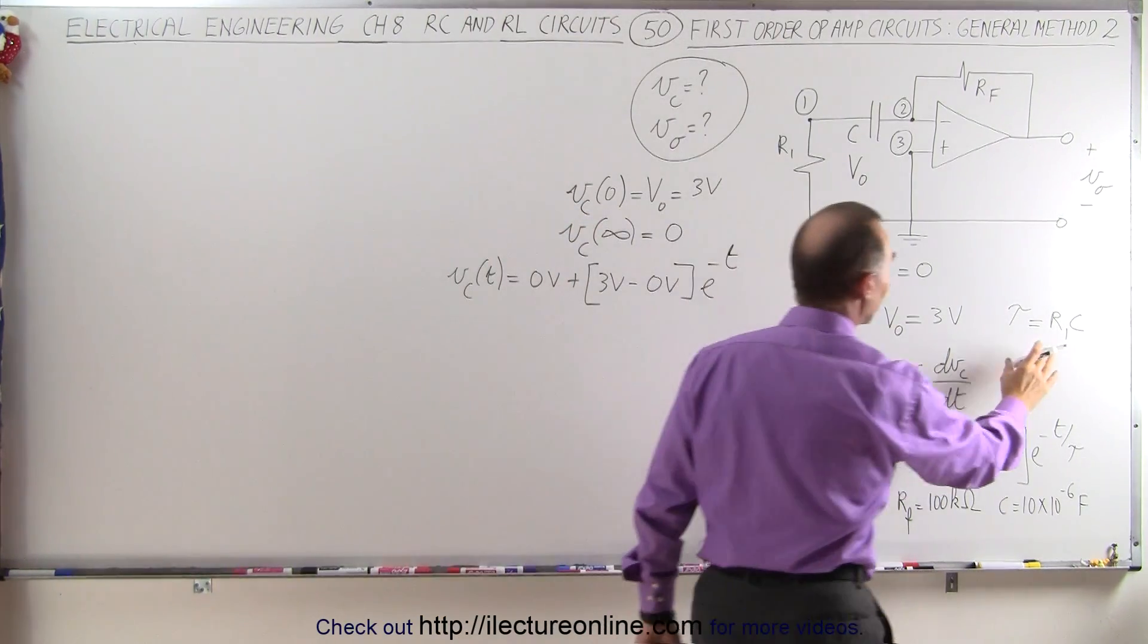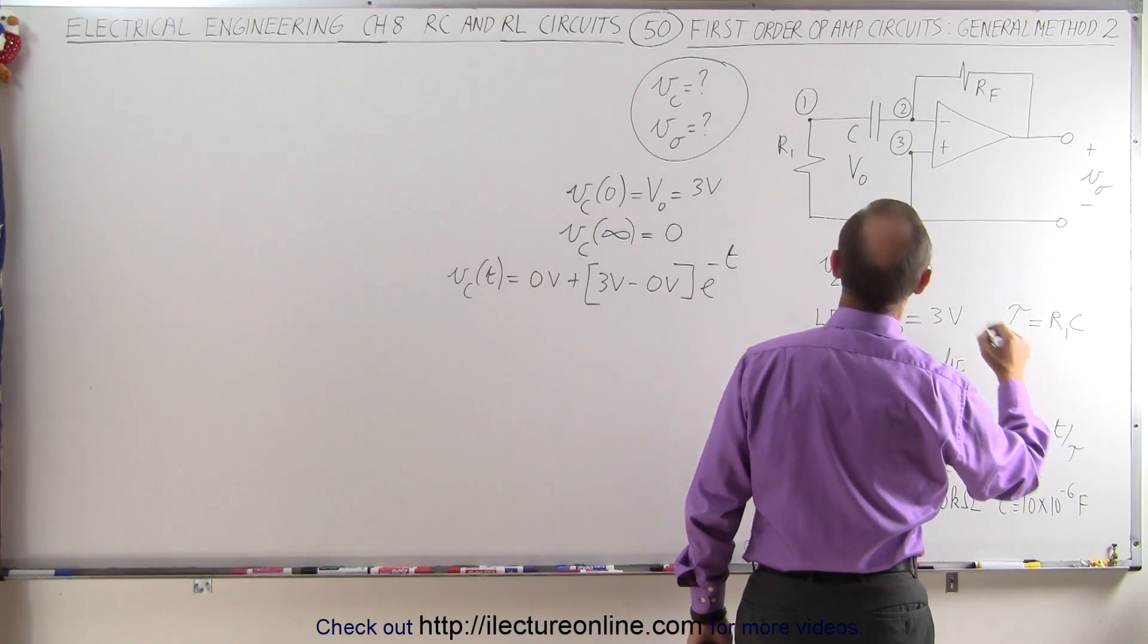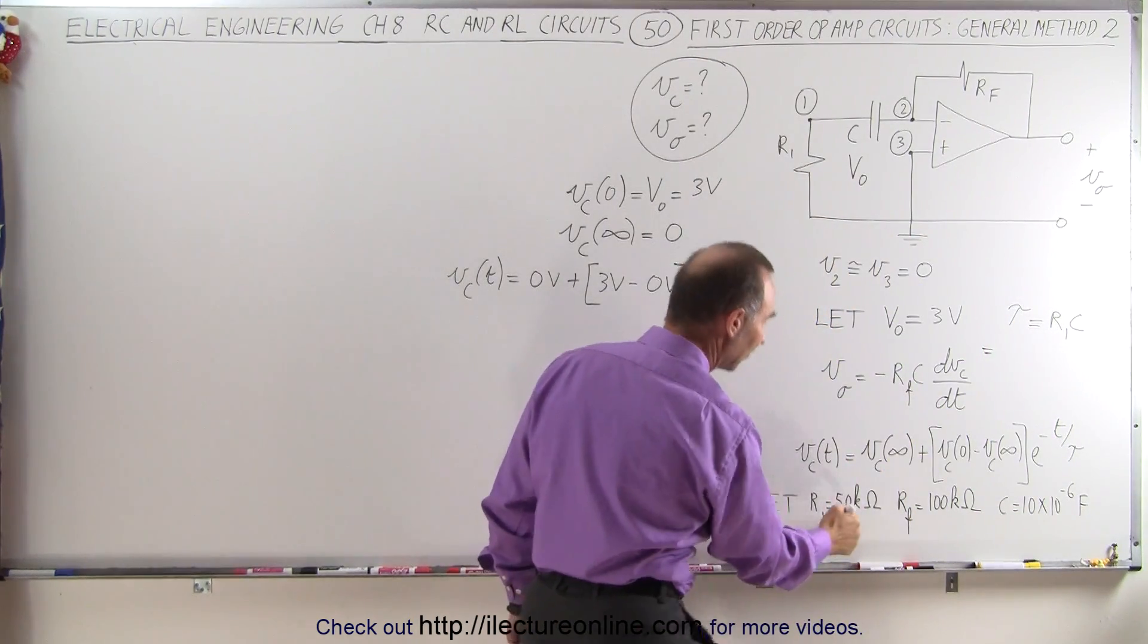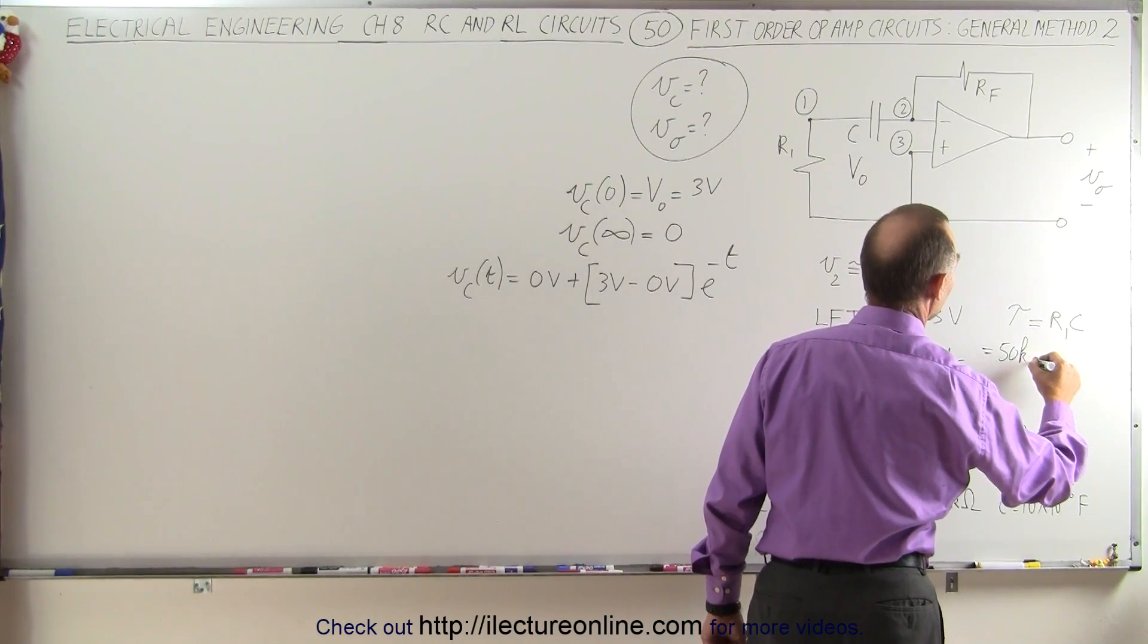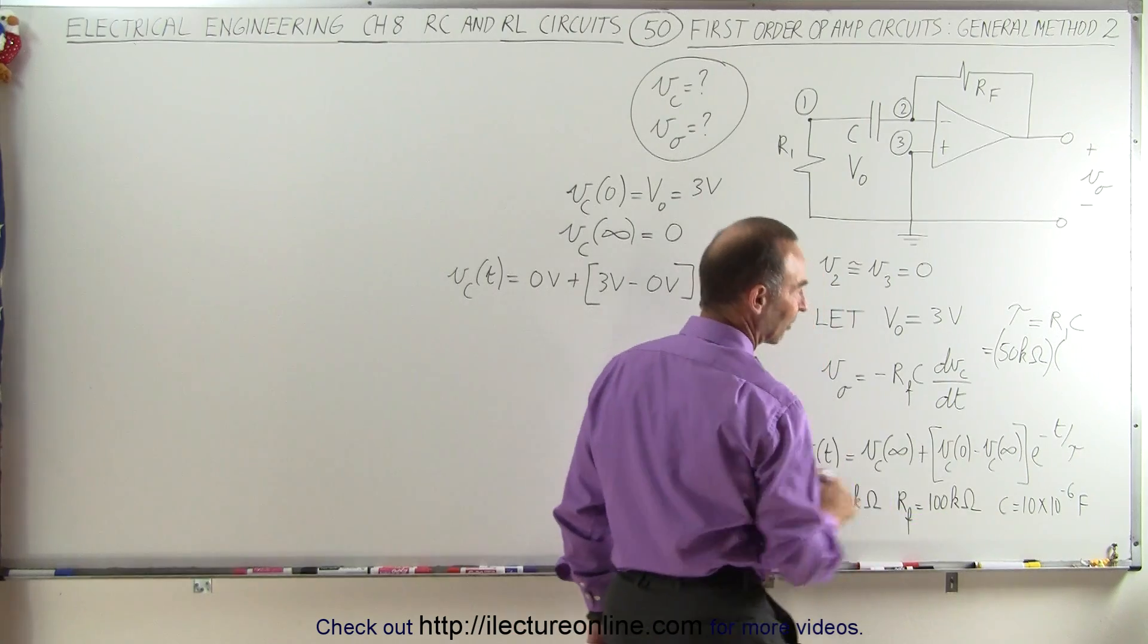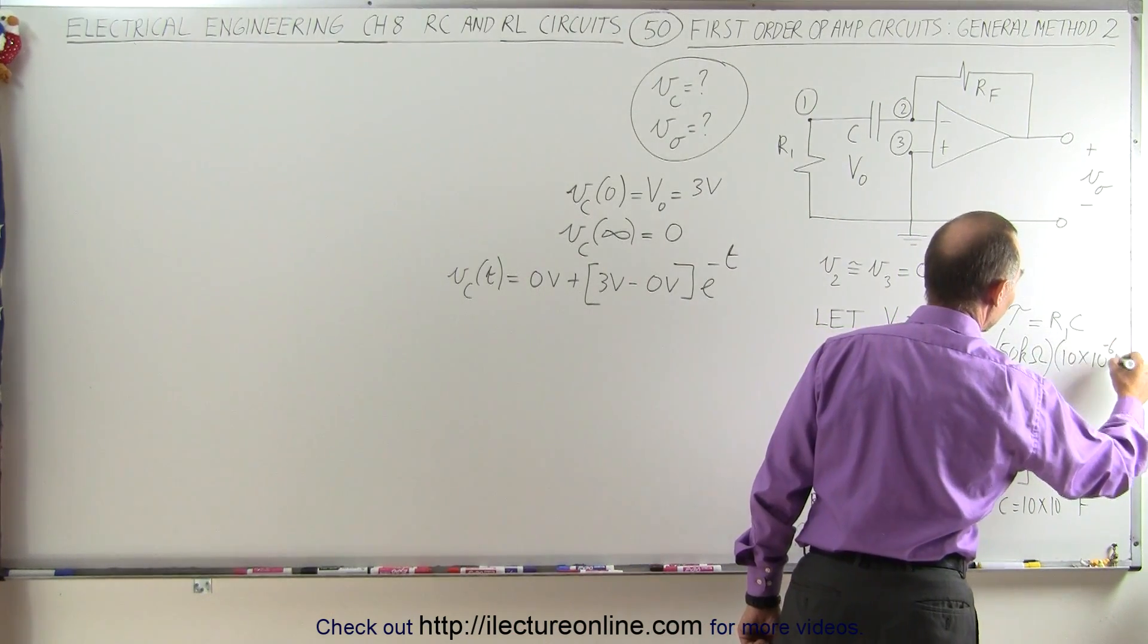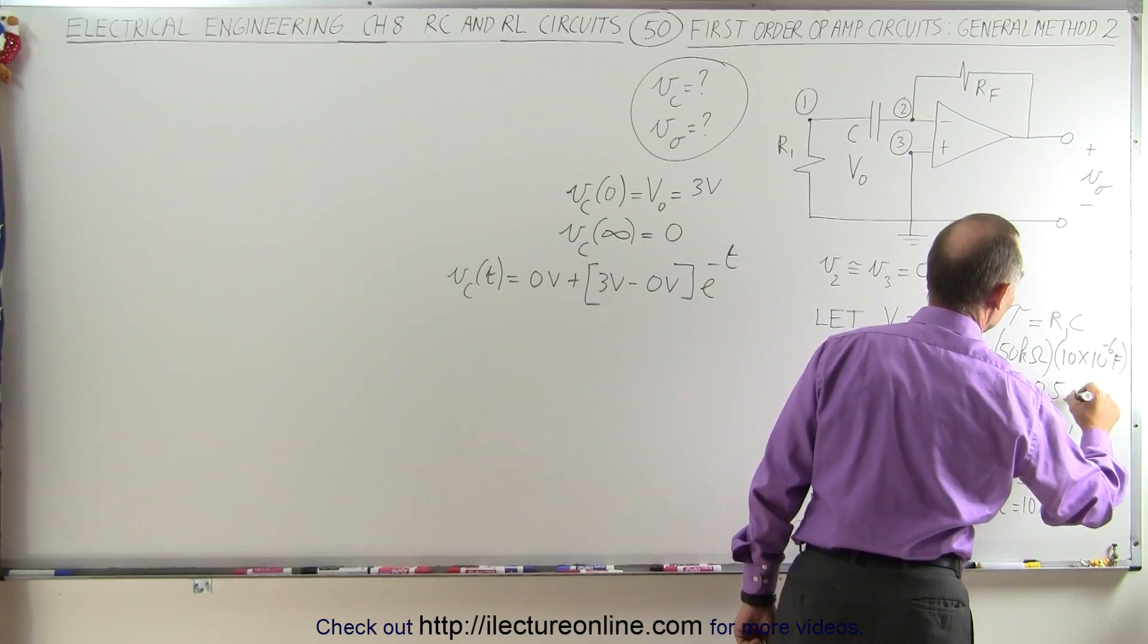Now tau is the time constant, which is going to be the product of R1 times the capacitance. R1 is defined at 50 kilohms, like we did on the previous video, multiplied times the capacitance, which is 10 times 10 to the minus 6 farads, which is equal to a half second.